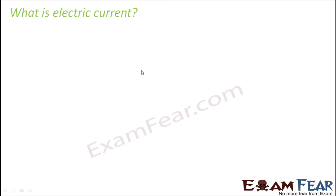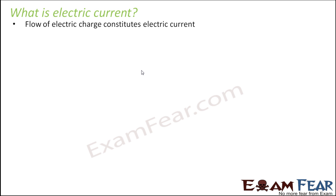Electric current is the flow of electric charges. A substance can be positively charged, negatively charged, or have a neutral charge. Any particle which carries a charge is called a charged particle. We will talk about electric charges in more detail in our next lesson. When these charged particles move, that movement of charged particles builds current.